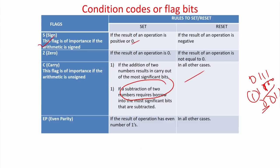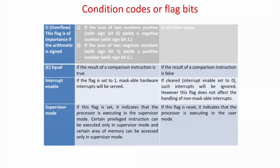Even parity: if the number of ones in the result is even, the parity flag is set; in other cases it is reset. For example, in this case the carry is 1 but the 4-bit answer is 0011, and the number of ones is 2, so it is even — even parity flag is set.